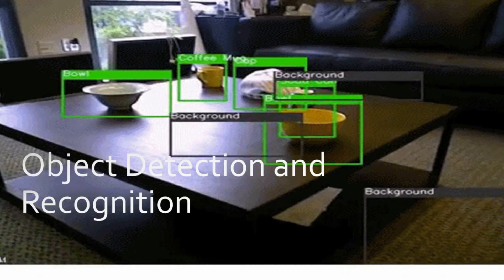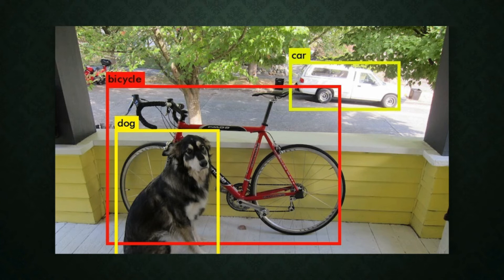We are also going to include deep learning and machine learning concepts to make all of this possible — to teach our computer to predict things. As you can see here, this is another object detection image where it can detect a dog, a bicycle behind it, and a car. When you have this kind of model, you take a photo of something, put it in, and it can predict everything that's in the image.